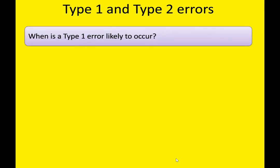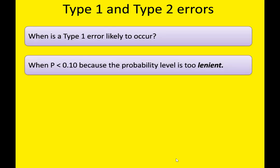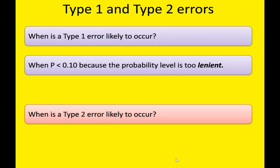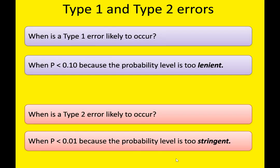Back to Type 1 and Type 2 errors — thinking about those probability levels, when is a Type 1 error likely to occur? A Type 1 error is when you've accepted the alternative hypothesis but should have accepted the null. The answer is p < 0.10, because the probability level is too lenient — there is a 10% probability the results are due to chance. A Type 2 error is likely to occur when p < 0.01, because that probability level is just too stringent — it's saying there is only 1% probability the results are due to chance.